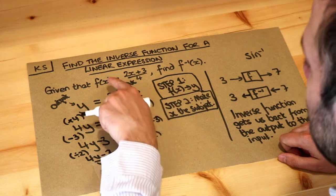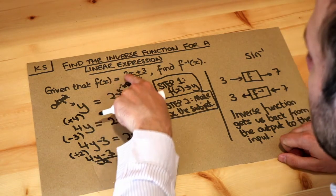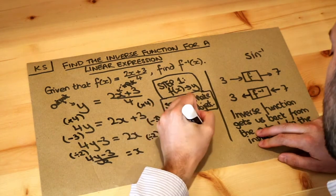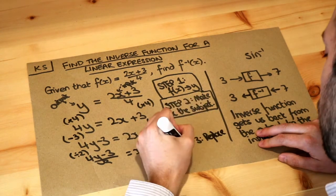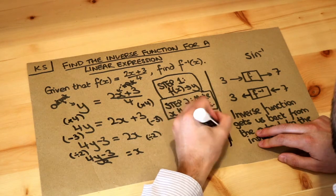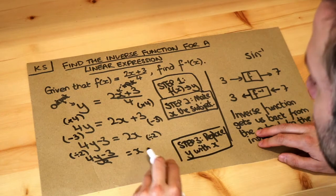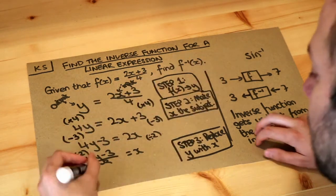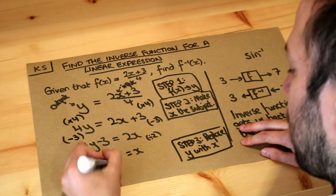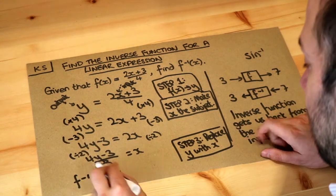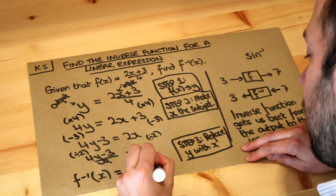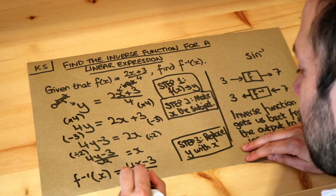Generally we want functions to be in terms of x — we want the input to be x and then have an expression in terms of x. So all we need to do now is replace the y with x. Any y you have, you replace with x, and the other side we write f minus 1 of x. So f to the minus 1 of x, the inverse function where the input is x, will be 4x minus 3 over 2. So that is the final answer.